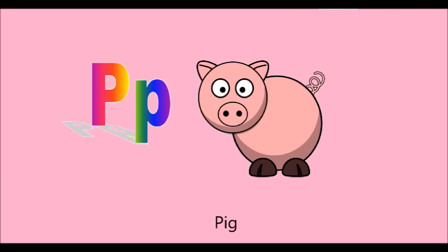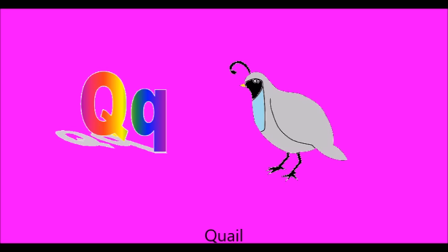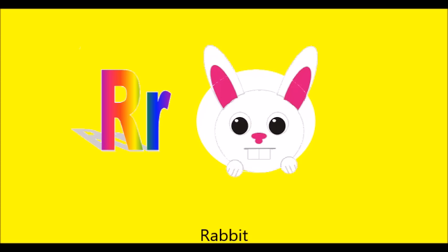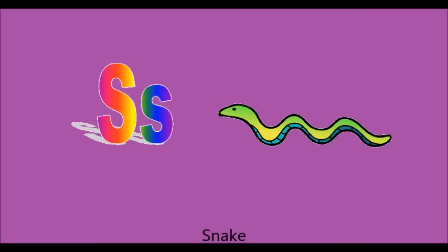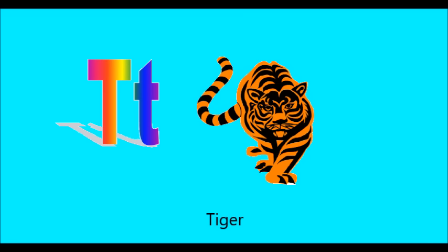P. P is for pig. Q. Q is for quail. R. R is for rabbit. S. S is for snake. T. T is for tiger.